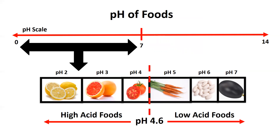Generally, fruits will be naturally high in acid, where vegetables and meats will be low-acid foods.